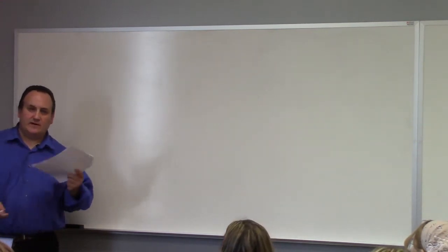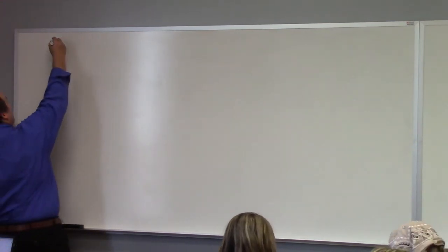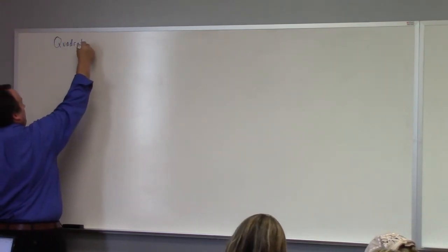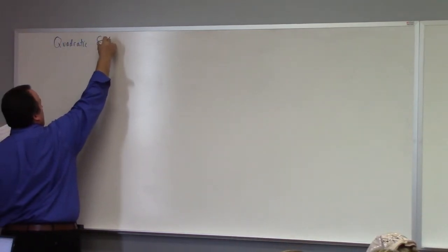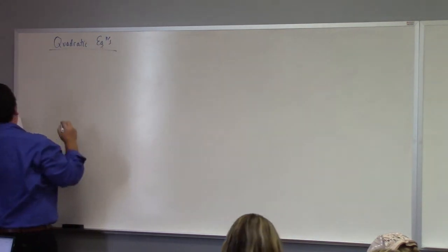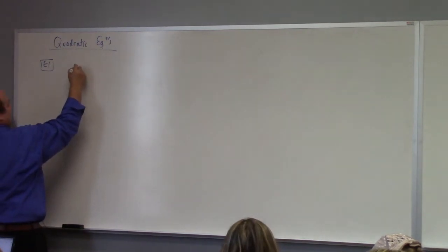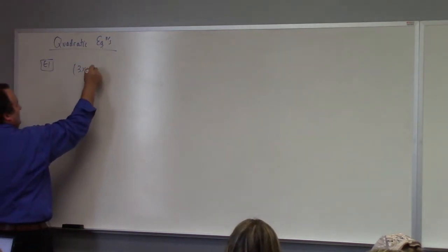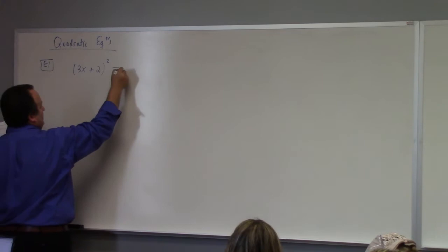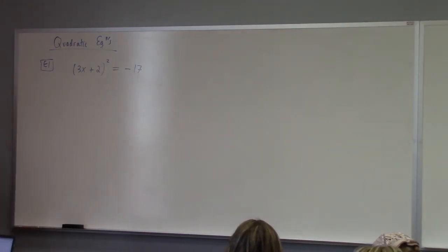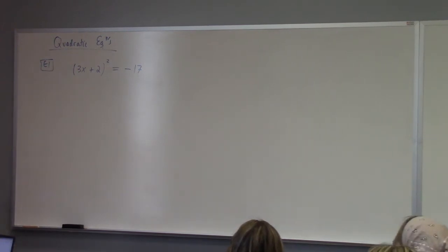So let's talk about quadratic equations again. I just want to talk about a few things. So first of all, if you've got something like 3x plus 2 quantity squared equals negative 17, and you're asked to solve that, well, what's the right approach to take here? How about we just use the square root property, right? We can take the square root of both sides.